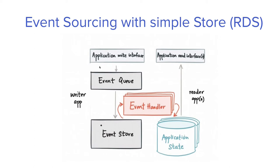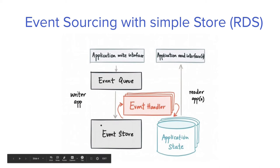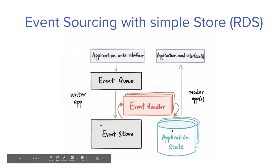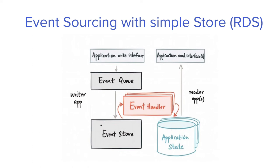All events are stored in the event store. The event store makes updates to the system, and then the reader application gets the updated application state. Since all incoming events are stored in the event store, you know for each event what the next system state will be — debit 10 rupees, credit 10 dollars. By storing debits and credits in the event store you know what the final state is going to be, and you can even replay the whole system state.